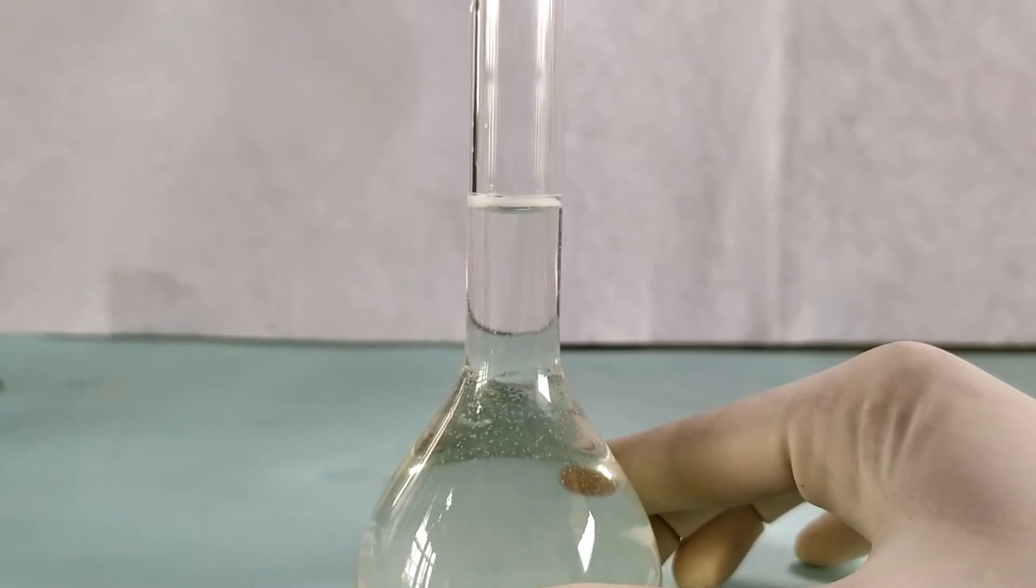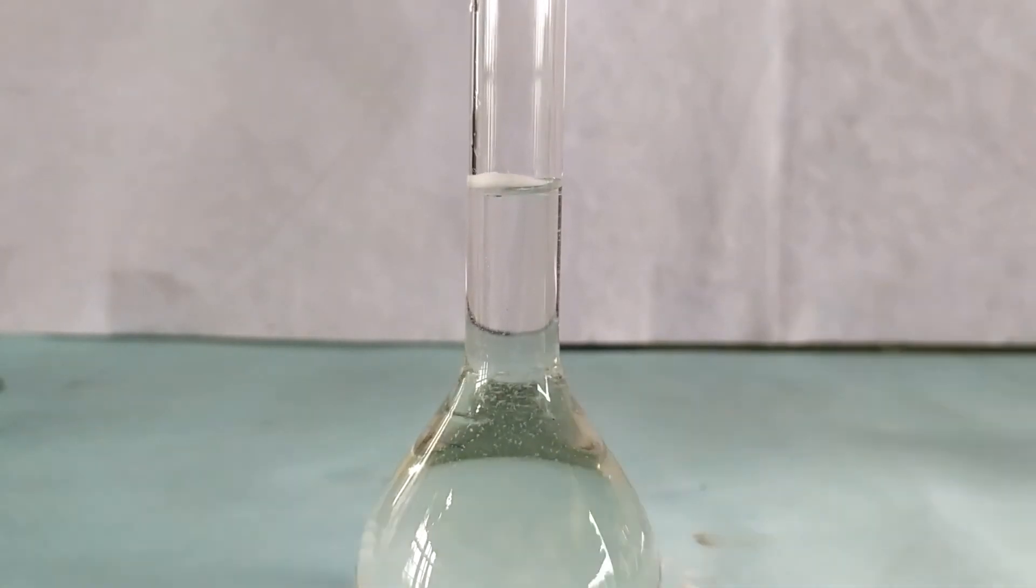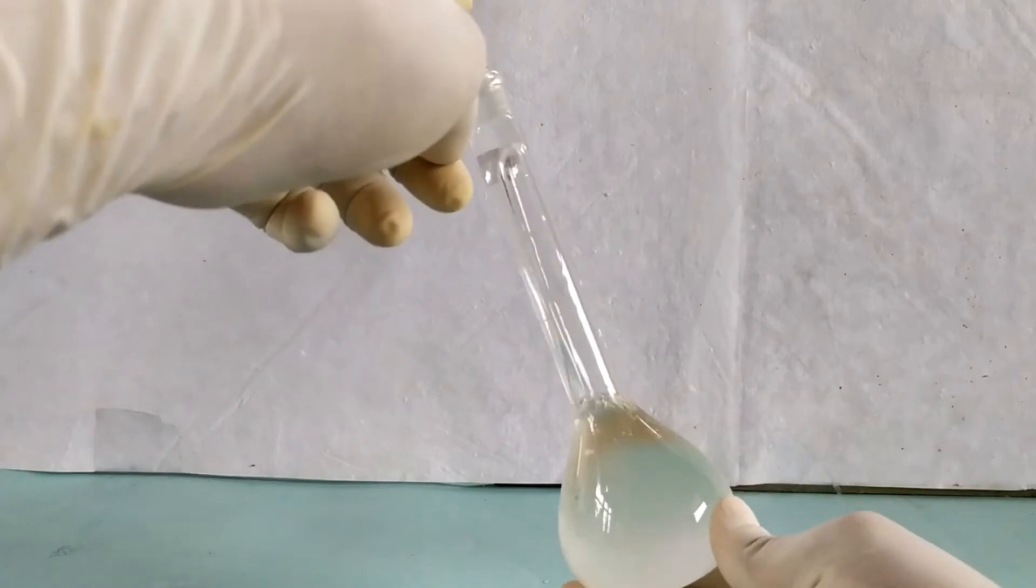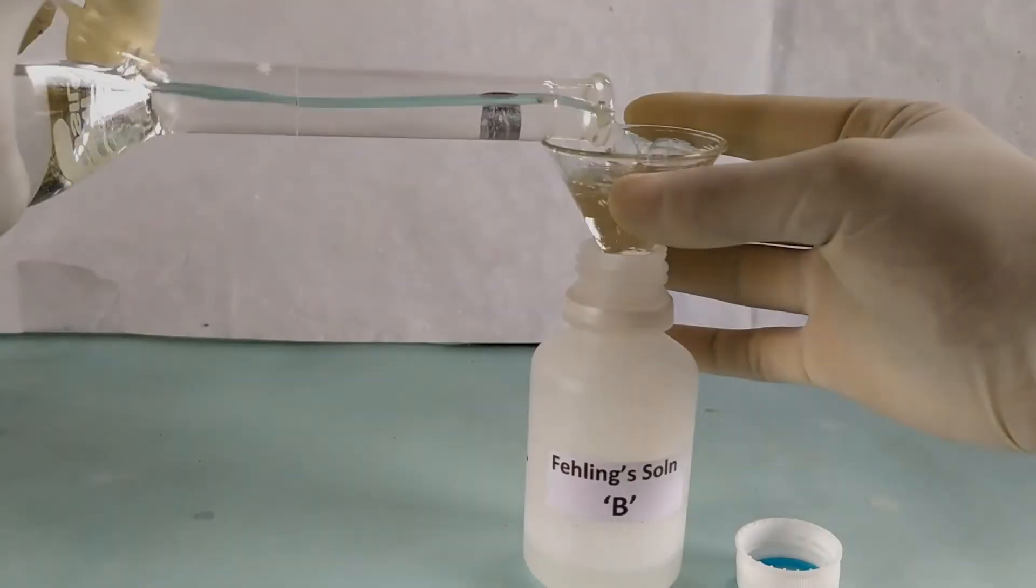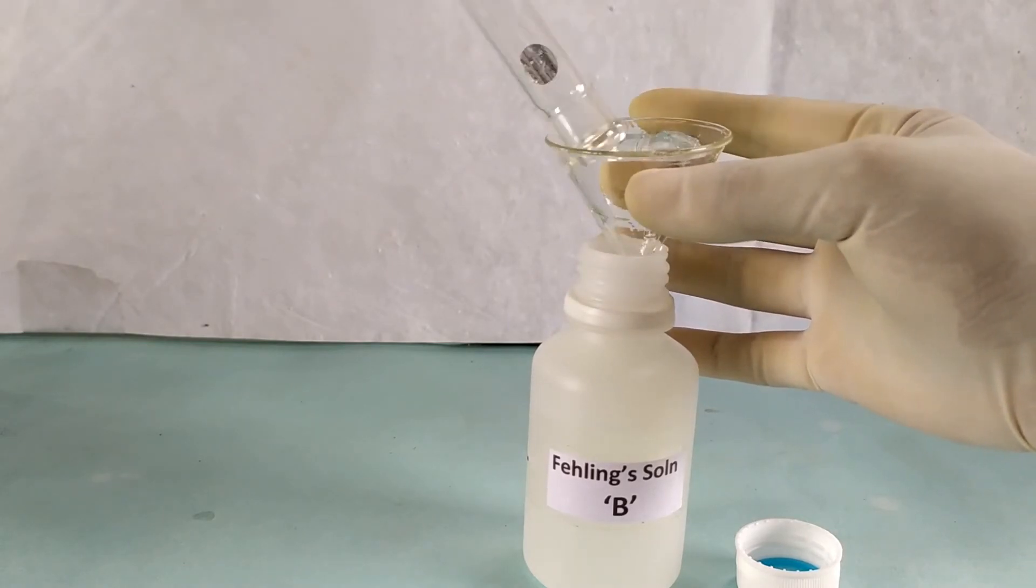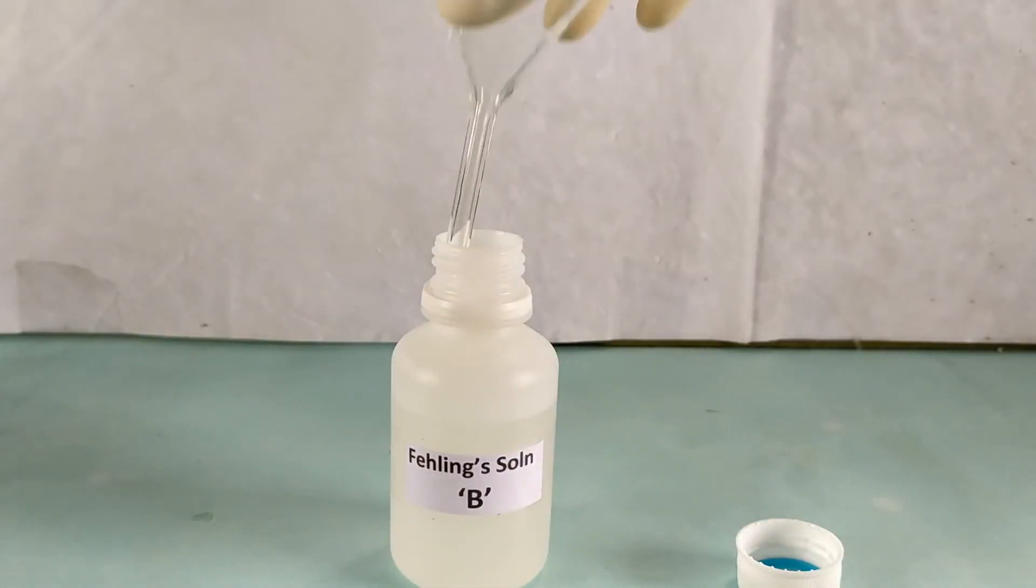Make up the final volume of the flask to 100 ml with distilled water using a dropper or a pipette. Mix the contents well by inverting the flask several times. Transfer the resulting solution into a container with a tight-fitting cap and label it as Fehling's solution-B.